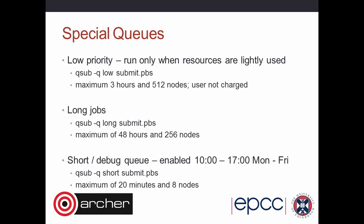There are special queues: a low-priority queue limited to 3 hours and 512 nodes, only active when the machine is lightly used — users aren't charged, so it's a way to run relatively small jobs using idle time. A 'long' queue ('qsub -q long') can run up to 48 hours but on up to 256 nodes. A very short debug queue ('qsub -q short'), active during working hours, allows maximum 20 minutes and 8 nodes — most useful for debugging and development work.